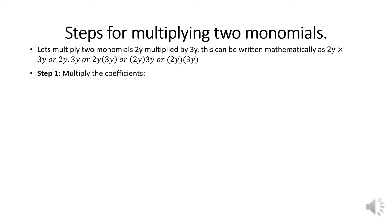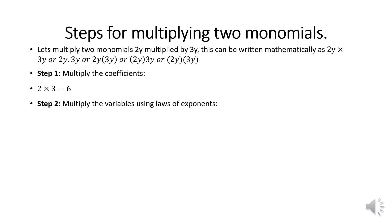Step number one when multiplying monomials is to multiply the coefficients first. Here we are multiplying: 2 multiplied by 3 gives you 6. And then you take the variables and multiply them. We've got y multiplied by y. Using the laws of exponents, remember that y has an exponent of 1, not 0.